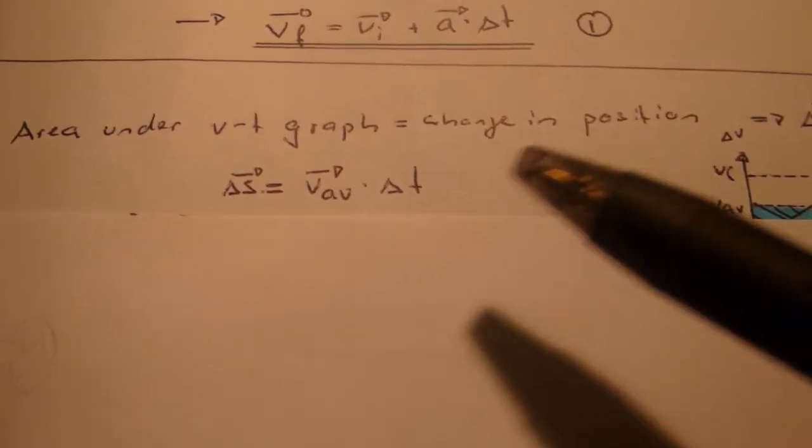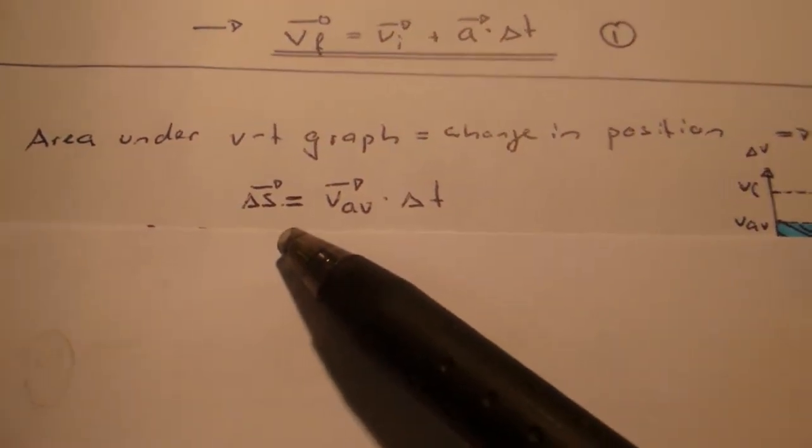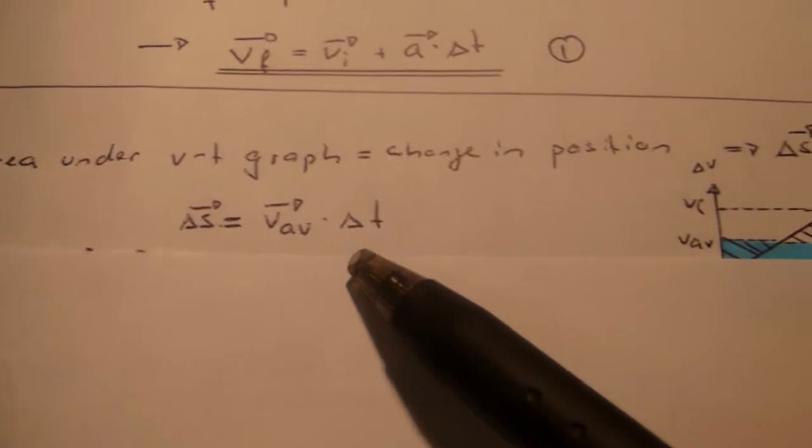Now we know that the area in blue is V average times delta t. How do we get there?